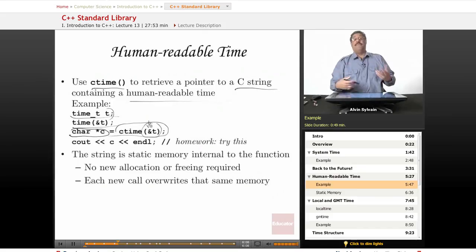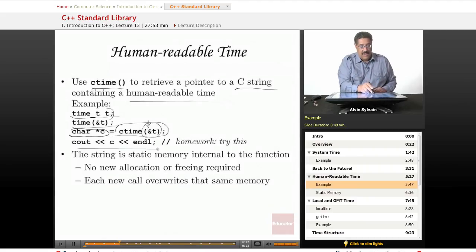Just about all of the time functions deal with a pointer to the time object because it may be an int. At some point in time in the future, it may turn into a struct. We don't know. So always pass it in the pointer. And then we print it out.